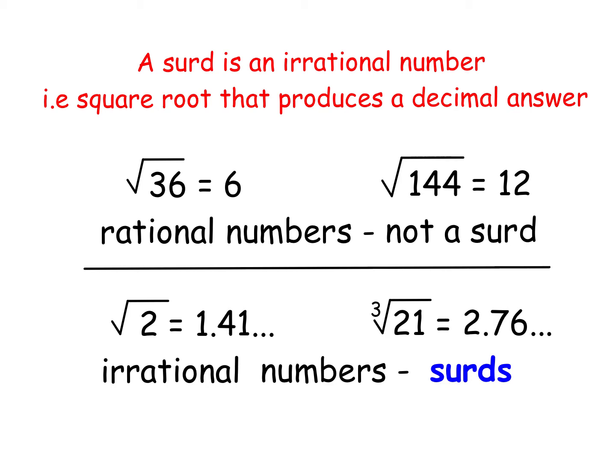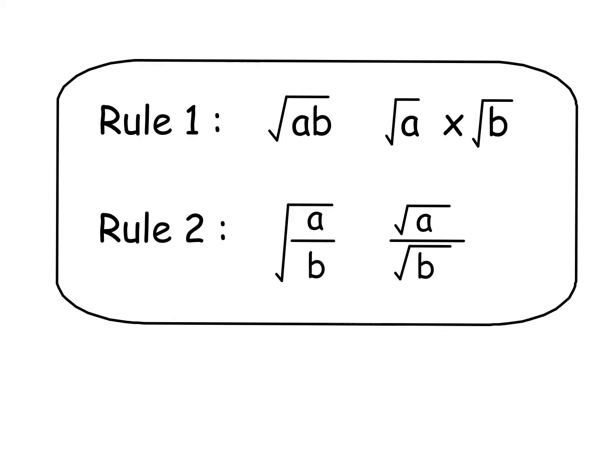But saying that, we can still simplify certain surd values. Now to simplify surds, there are two kinds of rules here. The first rule is if you have the square root of two numbers multiplied together, you can split this up into two different square roots being multiplied or two different surds being multiplied. Very simple example, square root of 12. 12 is a product of 3 times 4, so we could write that as square root of 3 times square root of 4.